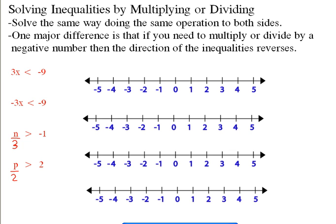Solving inequalities by multiplying or dividing is very similar to solving equations. You solve the same way by doing the same operation to both sides, just like we always do. The one major difference is when you need to multiply or divide by a negative number, then the direction of the inequalities reverses. I'll go over what that means in a second here.